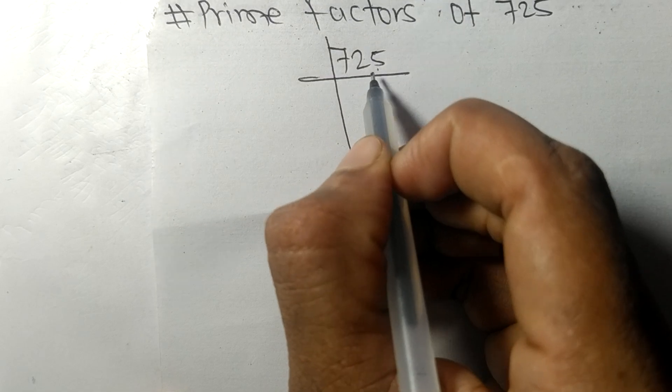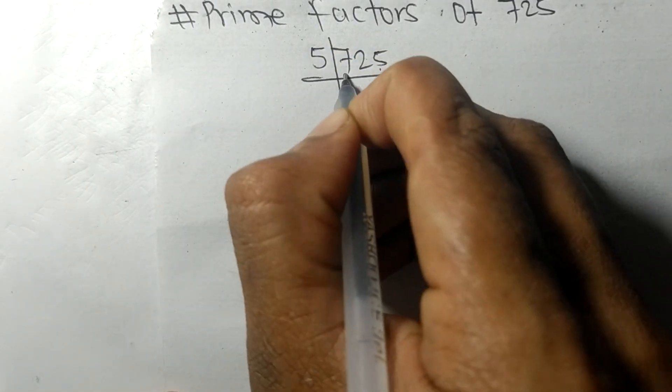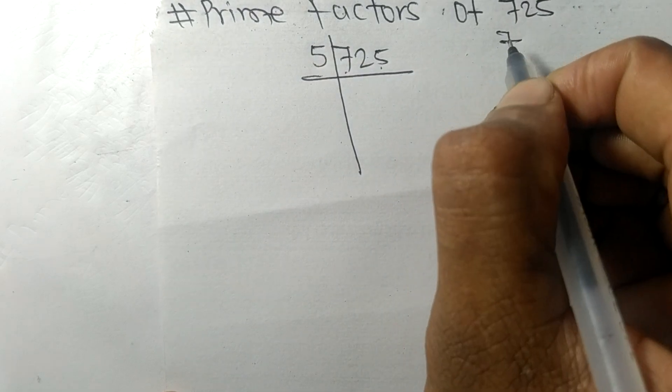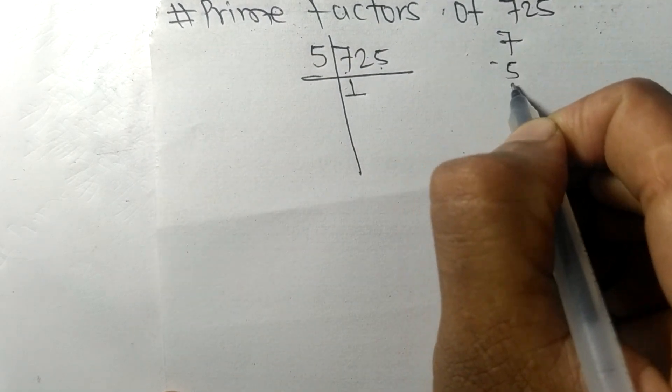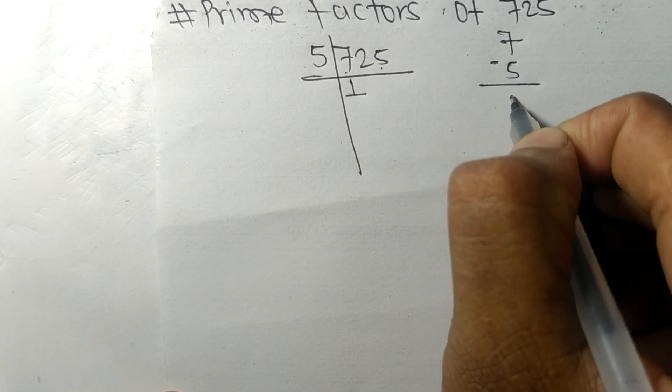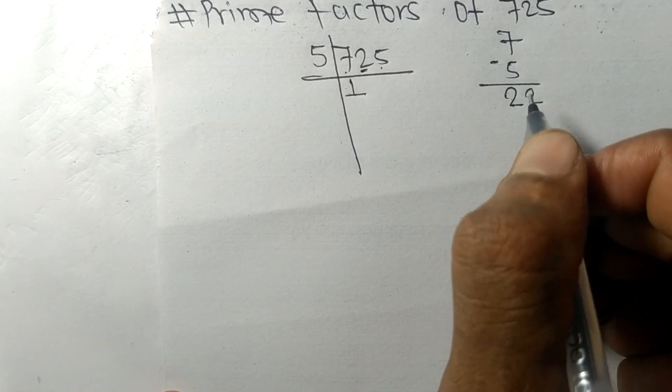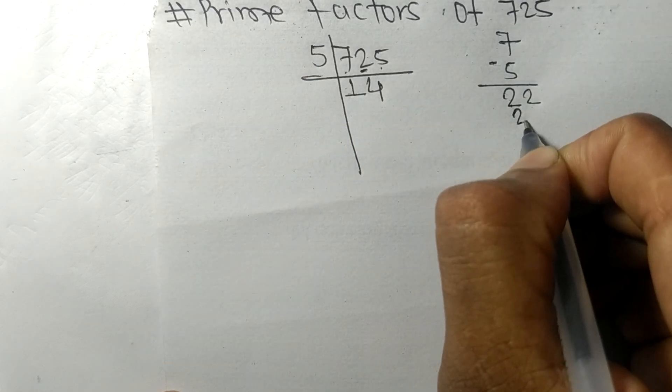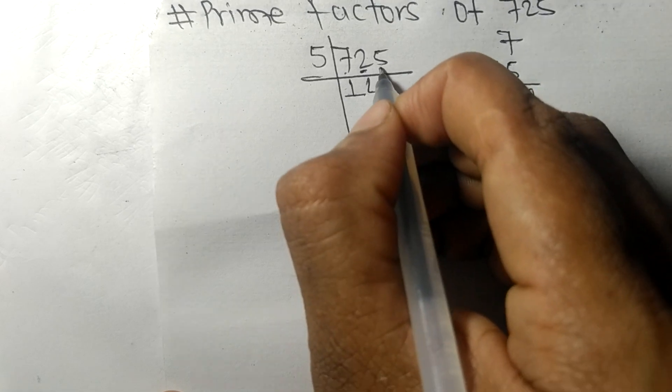First we have 7, so 5 times 1 equals 5, and on subtracting we get 2. Then we have 22, so 5 times 4 equals 20 with remainder 2. Then 25, so 5 times 5 equals 25.